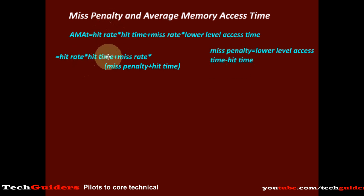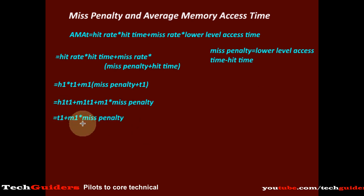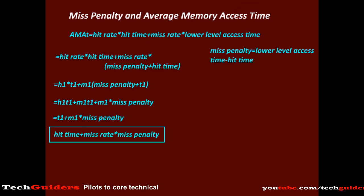Hence the equation becomes: hit rate times hit time, plus miss rate times (miss penalty plus hit time). With hit rate h1, hit time t1, and miss rate m1, this expands to h1·t1 + m1·t1 + m1 times miss penalty. Since hit rate plus miss rate equals 1, we can factor out t1, giving t1·(h1 + m1) + m1 times miss penalty, which simplifies to t1 plus m1 times miss penalty. That is: hit time plus miss rate times miss penalty.